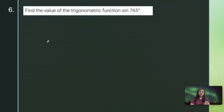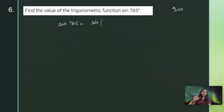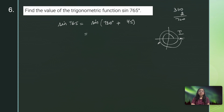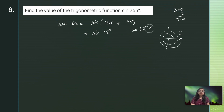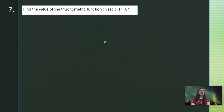Question 6: Find the value of sin 765°. I can write 765° = 720° + 45° = 2×360° + 45°. Since 360° represents two full rotations, the angle lands in the first quadrant. Using sin(2π + θ) = sin θ, we get sin 765° = sin 45° = 1/√2.